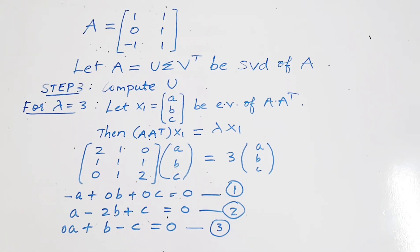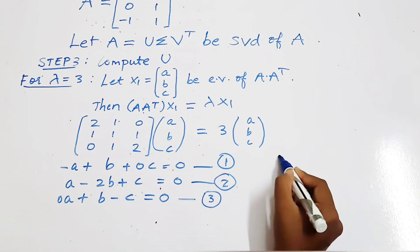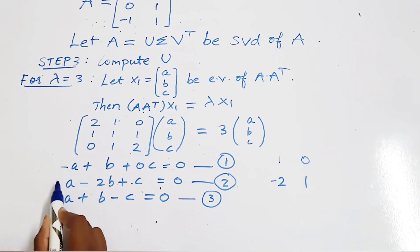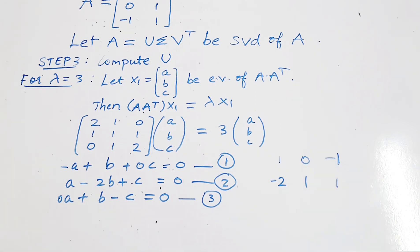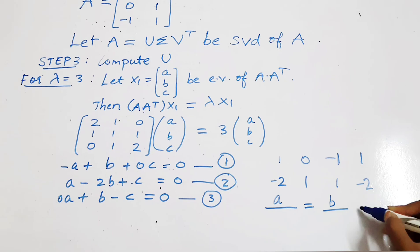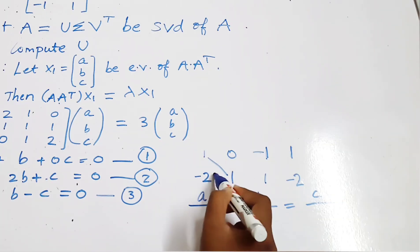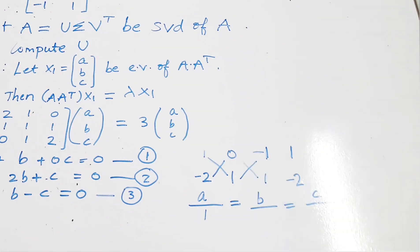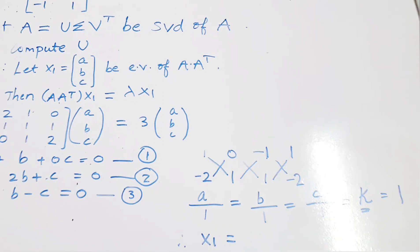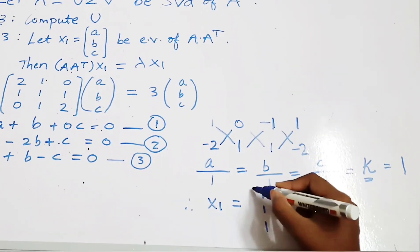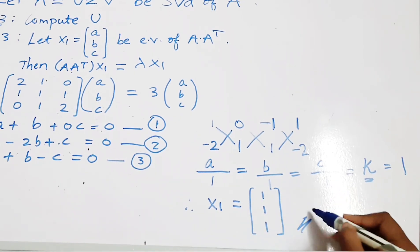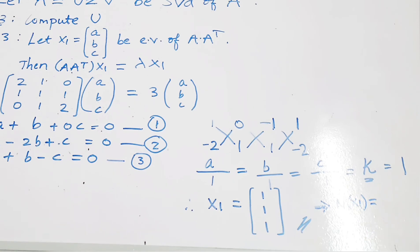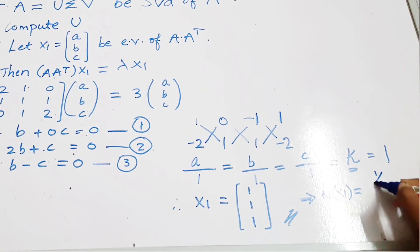We have to solve these three equations. Consider the first two equations. First write the coefficients of b, then coefficients of c, then coefficients of a, then again coefficients of b. Next we cross multiply, giving a/1 equals b/1 equals c/1. So the values of a, b, c are 1, 1, 1. Therefore x1 equals [1, 1, 1]. Next we normalize this eigenvector: the normalized x1 equals [1/root 3, 1/root 3, 1/root 3].